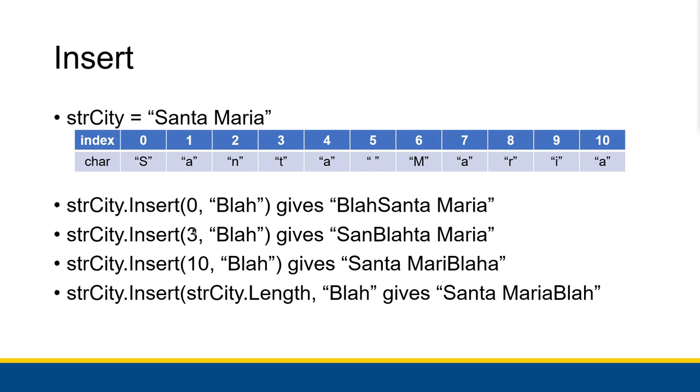If I start it at index 3 instead, then it will start right where this T is supposed to go. What happens there is that blah kind of muscles its way and it says I want to start at index 3 now, all of you have to wait after me. So we have San, blah, and then let's see B, L, A, H, at index 7 the letter T, index 8 the letter A, index 9 is a space, and so on and so forth. So blah starts at index 3.